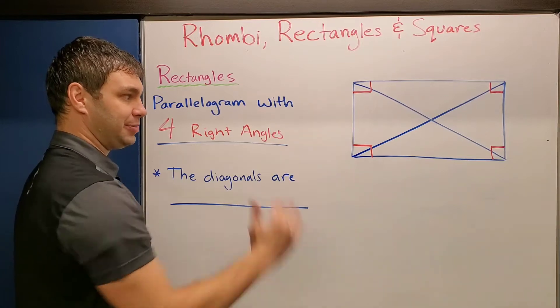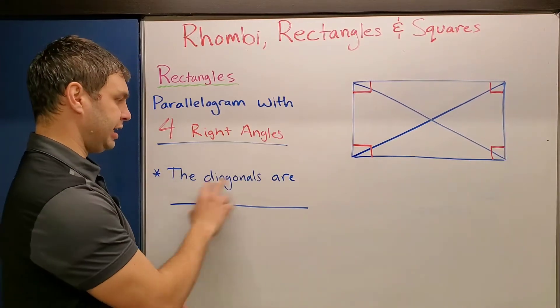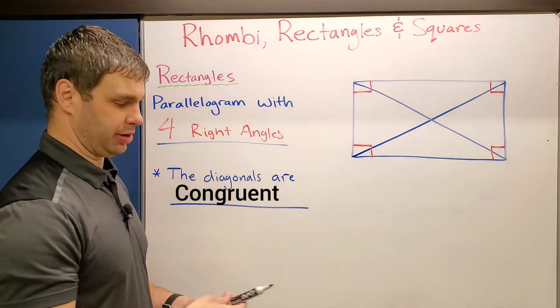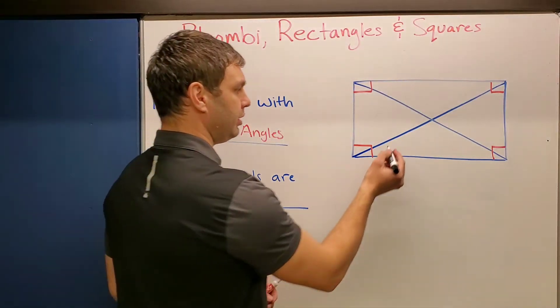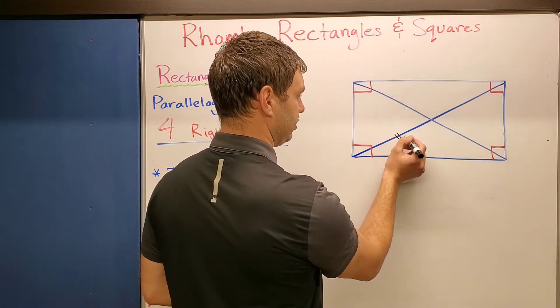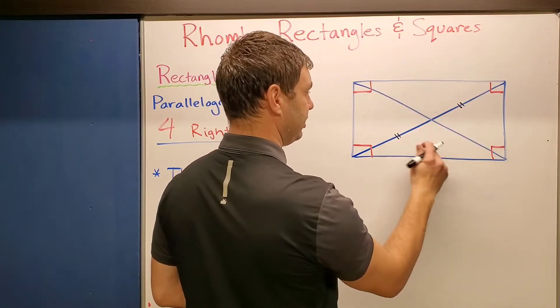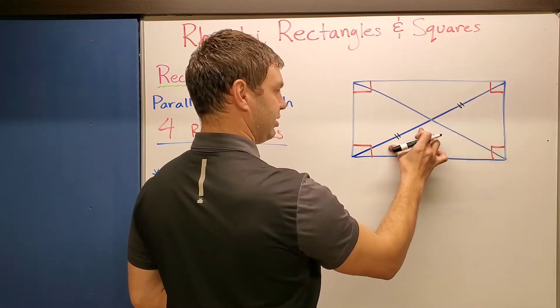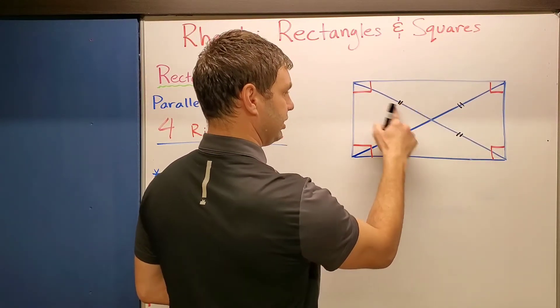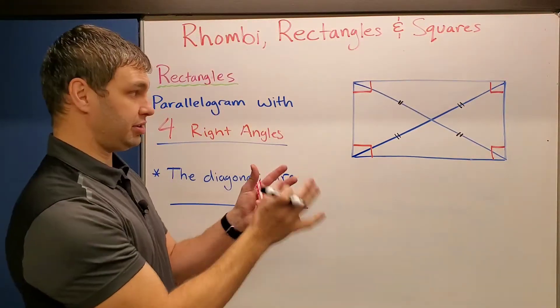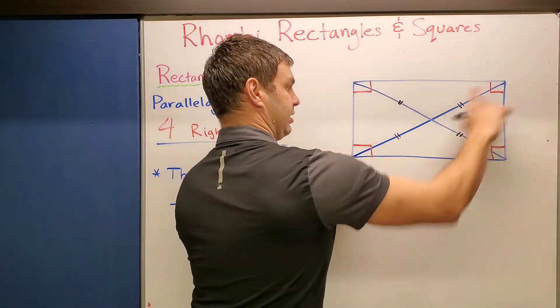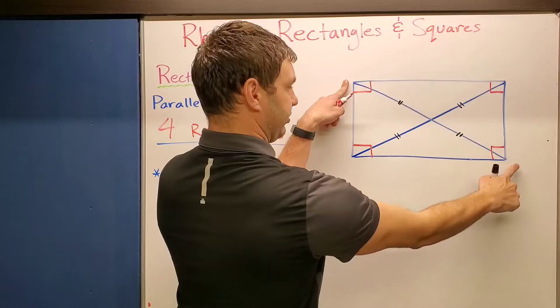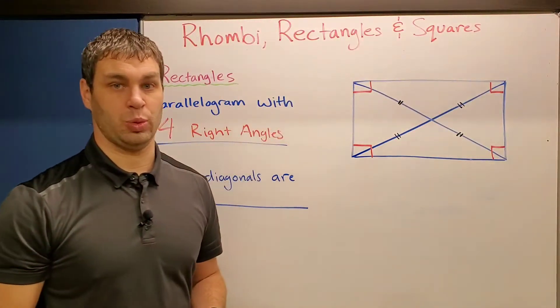Okay. Now something else that's special about a rectangle is that it has diagonals that are congruent. And the way that we're going to show that on our graph over here is I'm going to put a couple of tick marks on each of these. So those tell me that this and this are the same. And also that this and this are the same. And so since they're both the same together, this length from here to here, and also this length from here to here have to be congruent as well.